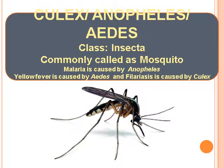Culex, Anopheles, and Aedes — Class Insecta. Malaria is caused by Anopheles, Yellow Fever is caused by Aedes mosquito, and filariasis is caused by Culex mosquito.